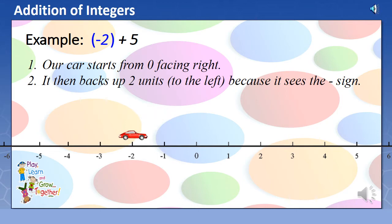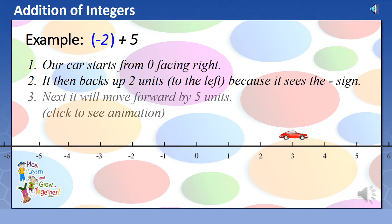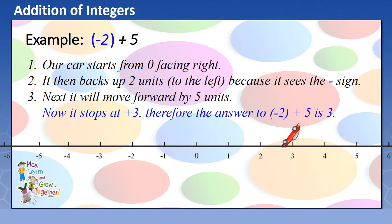Next, it will move forward by 5 units. Now, it stops at positive 3. Therefore, the answer to negative 2 plus positive 5 is positive 3.